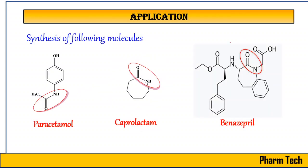Coming to the applications of Beckmann Rearrangement — it can be used for the synthesis of certain well-known molecules. For example, paracetamol has an amide bond which can be introduced by Beckmann Rearrangement starting from phenol. Caprolactam can be synthesized from cyclohexanone, again using Beckmann Rearrangement to introduce nitrogen inside the ring. The molecule benzoylamide can also be synthesized using Beckmann Rearrangement, since it contains a lactam ring. So Beckmann Rearrangement has wide application in synthetic chemistry.